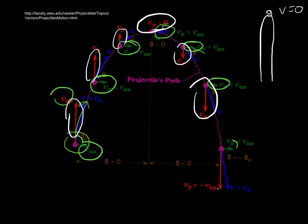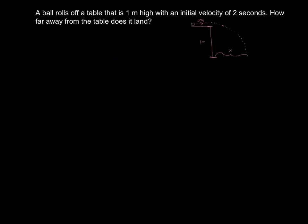Then you get faster and faster going in the opposite direction. At the end, your y-velocity is the negative of your initial y-velocity, just like when you go up and come back down, your final velocity is the negative of the initial. So let's put this to work on a couple of problems.